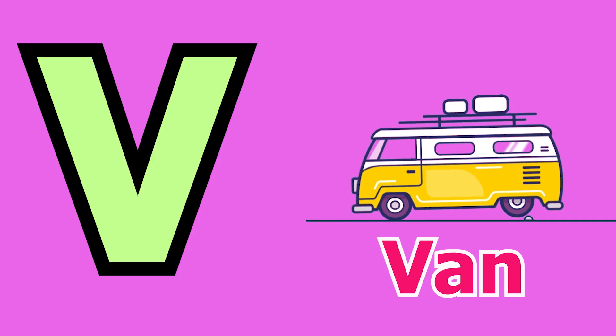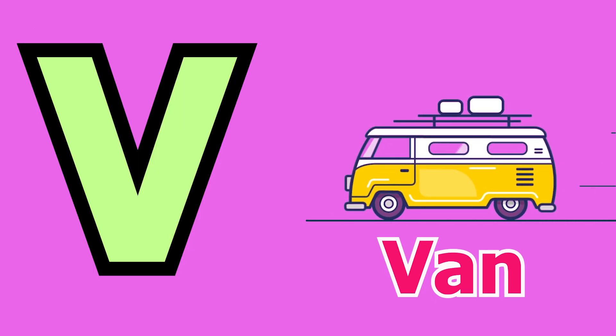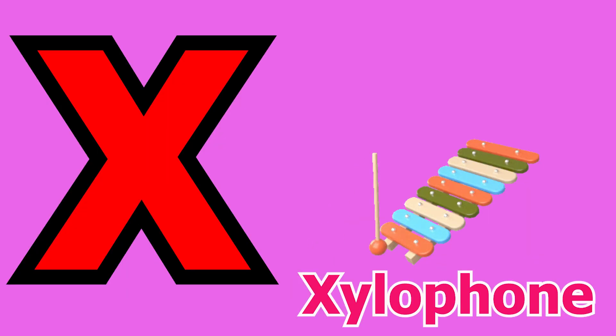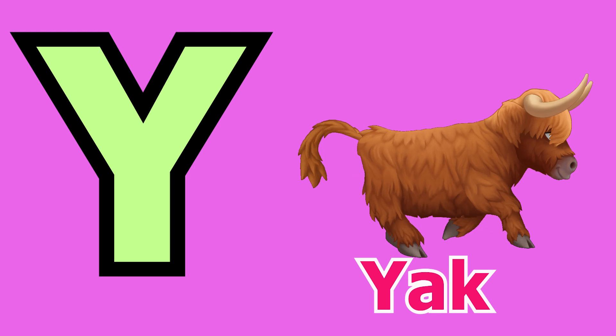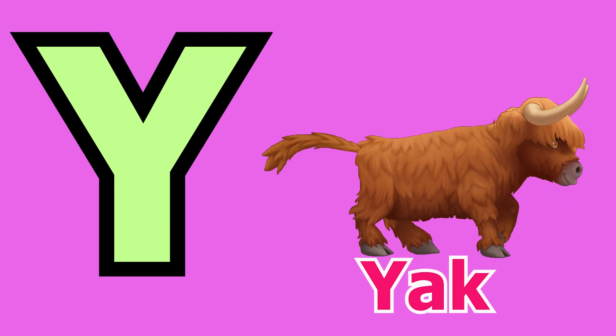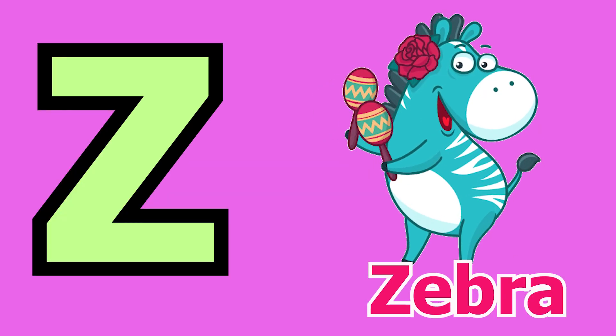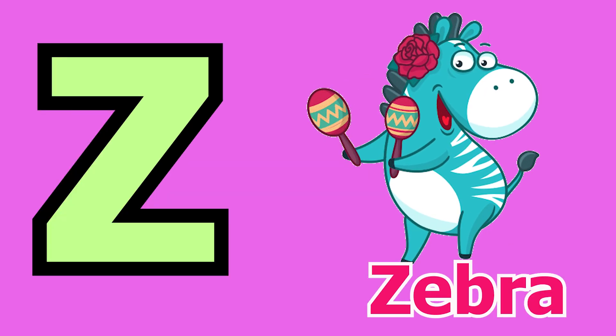V for van, W for watch, X for xylophone, Y for yak, Z for zebra.